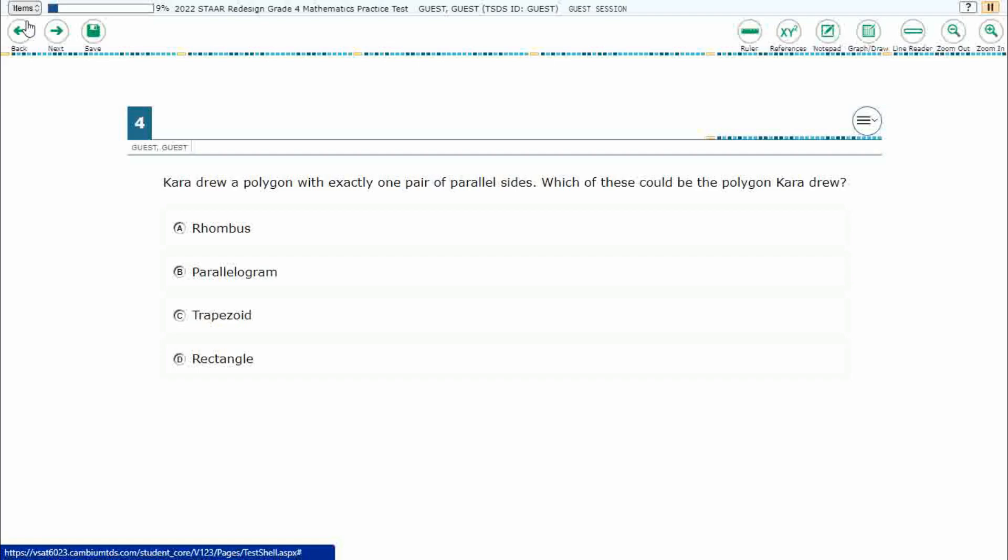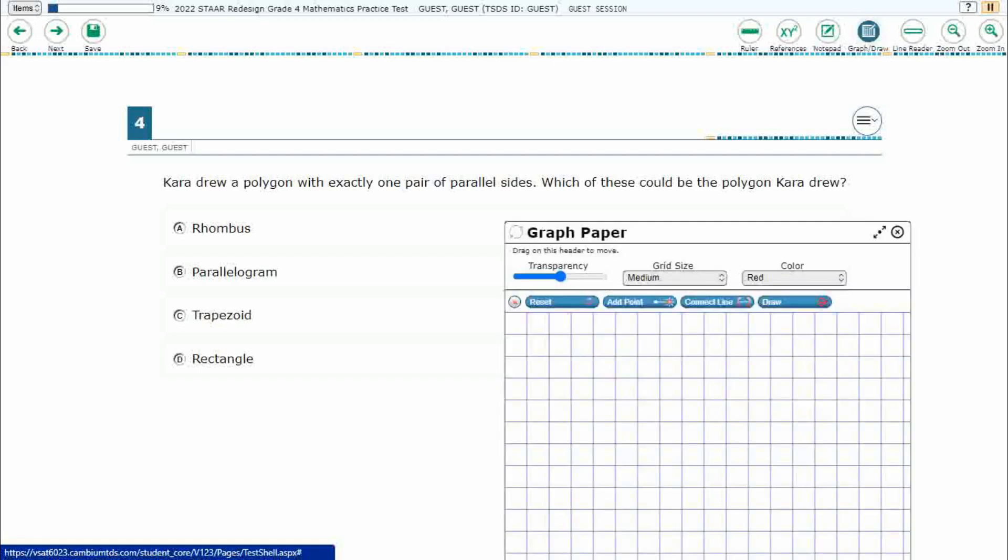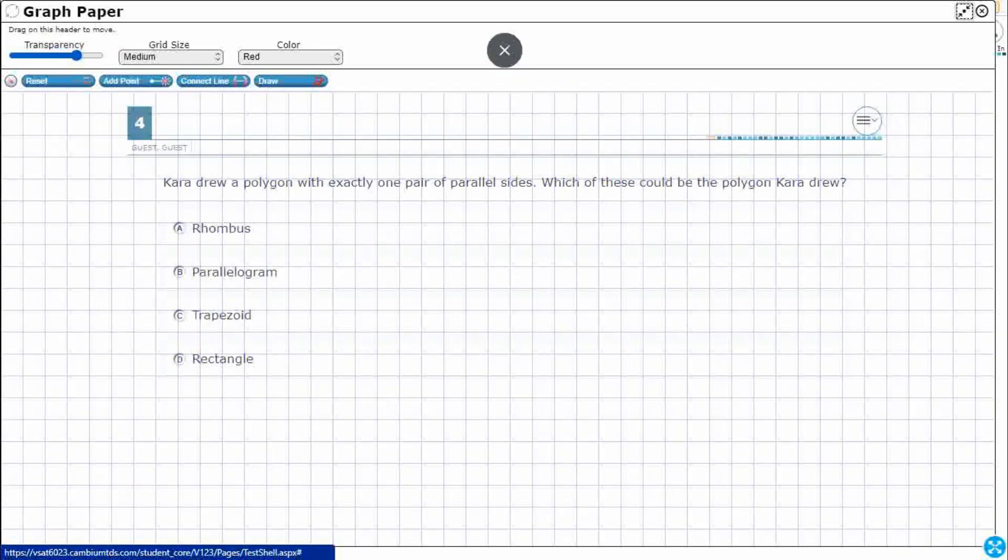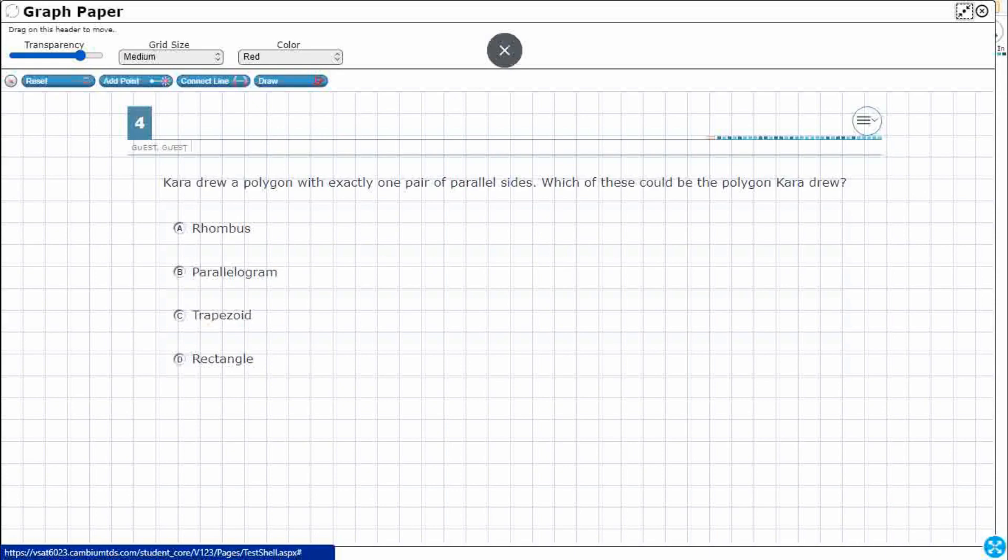Alright, so we're going to use this graph draw feature. It pops up down here. We're going to extend it out a little bit and increase the transparency so we can see the problem behind there.